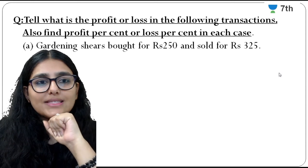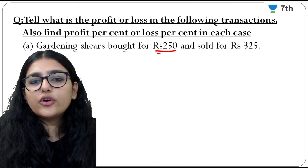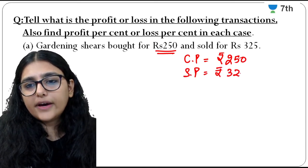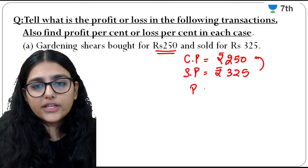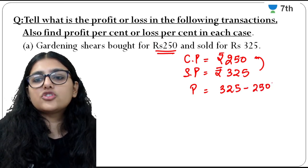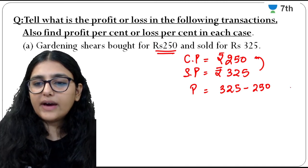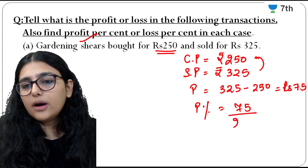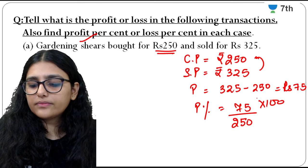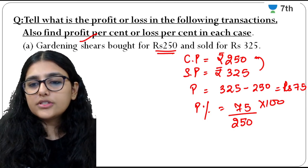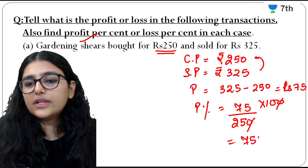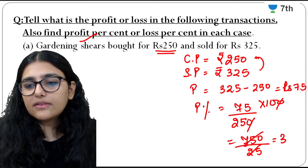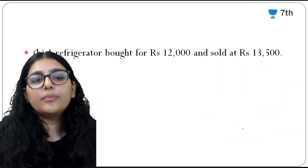Gardening shares bought for Rs. 250 and sold for Rs. 325. Since selling price > cost price, there is profit. Profit = 325 − 250 = Rs. 75. Profit percent = (75/250) × 100 = 750/25 = 30%. So it is 30% profit.